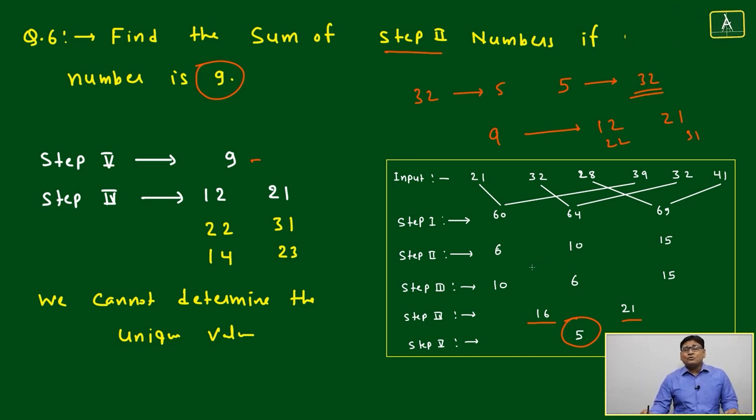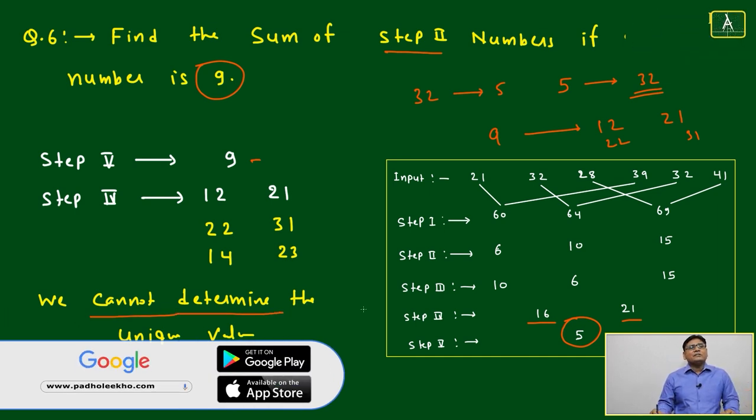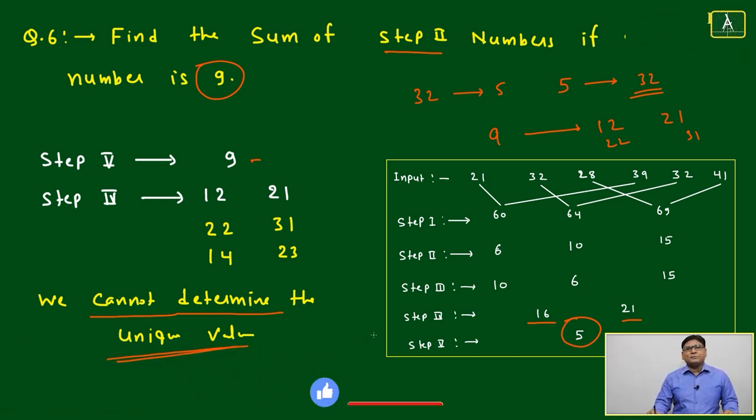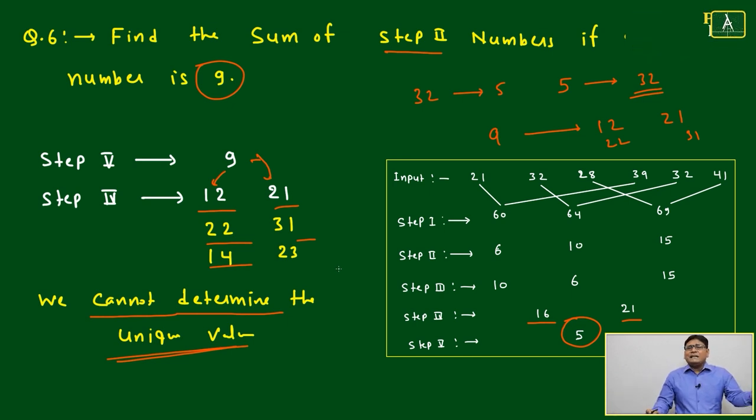To make it sure, we need additional information. If additional information is not given, then what we can say - best option is we cannot determine. In a unique way, multiple sets of options can be possible. From step 5 to step 4, if we are coming, then it can be 12 or 21, it can be 22 to 31, it can be 14 to 23, anything.